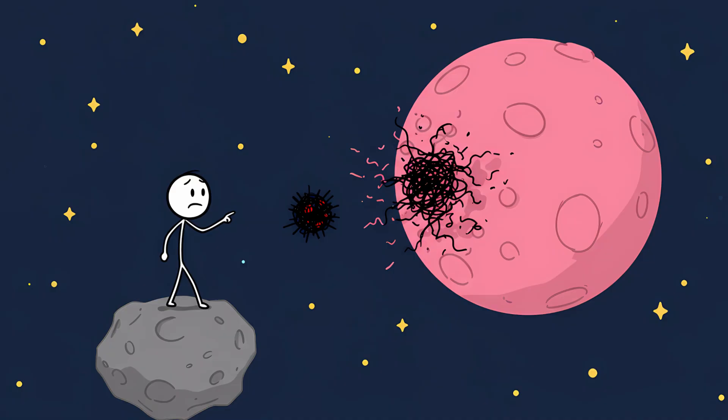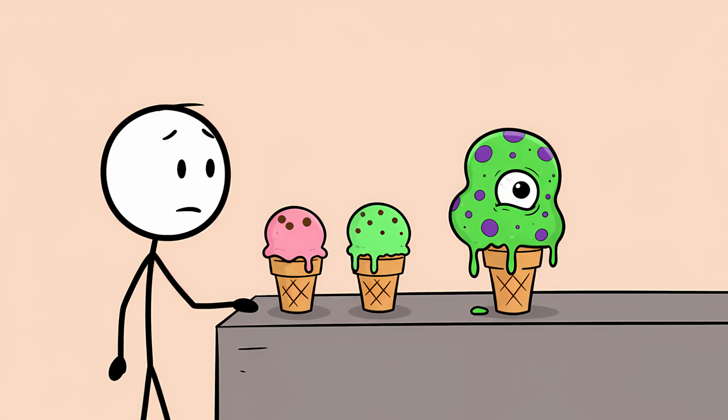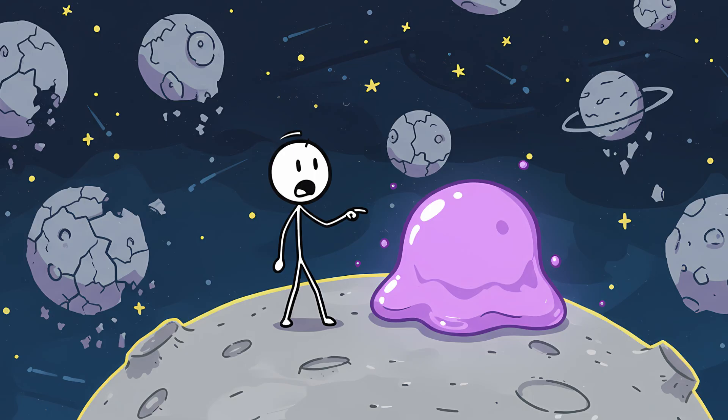Let's talk about strange matter and its theoretical delivery system, the strangelet. In the world of particle physics, you have your standard up and down quarks that make up protons and neutrons, but there are other, more exotic flavors like the strange quark. The theory is that under extreme pressure, like inside a neutron star, a soup of up, down, and strange quarks could form a substance called strange matter.